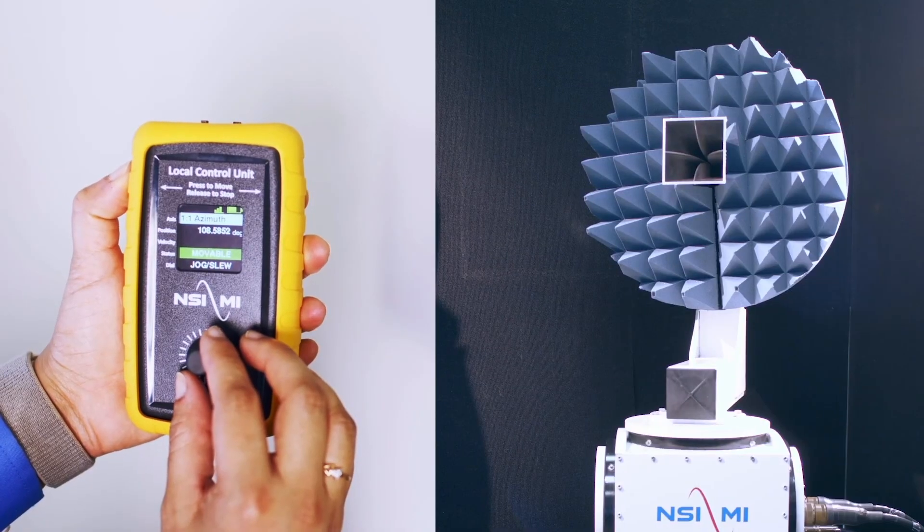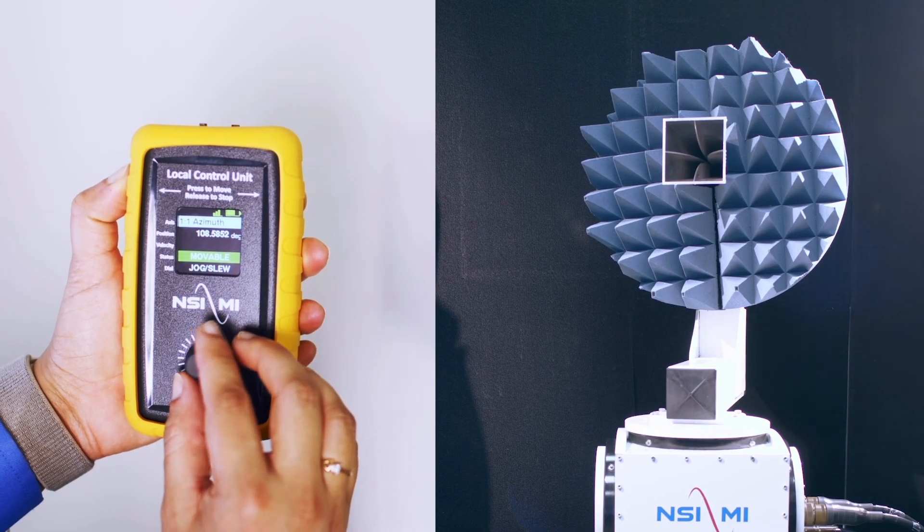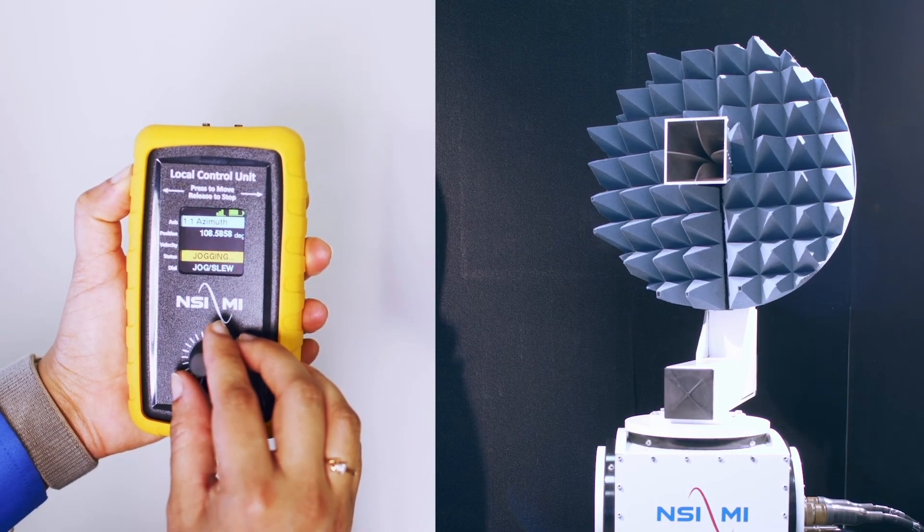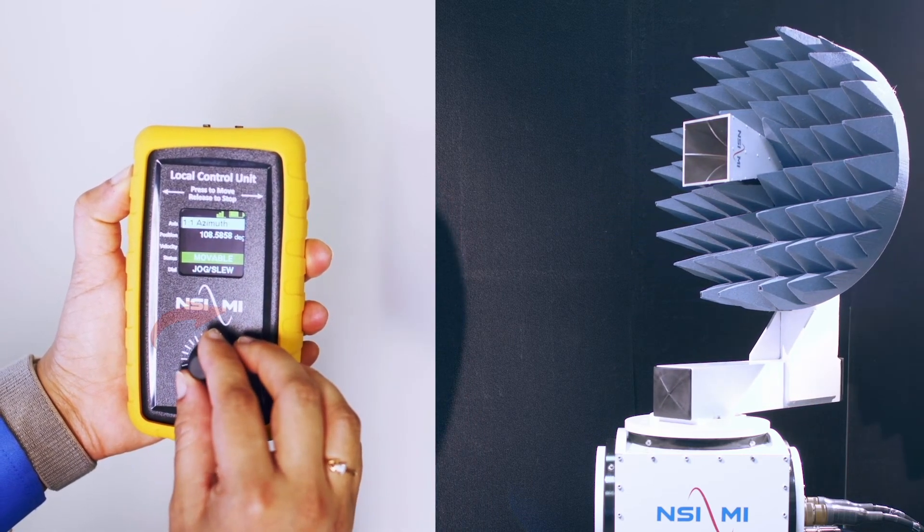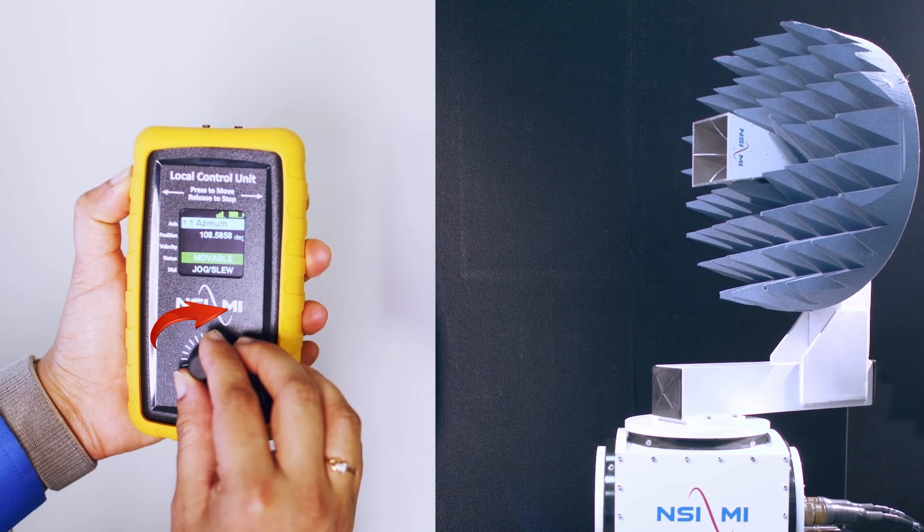In order to perform a jog mode, move the rotary dial one or more detents and quickly bring it back to its original position. The direction of the motion depends on the direction of the rotary dial.